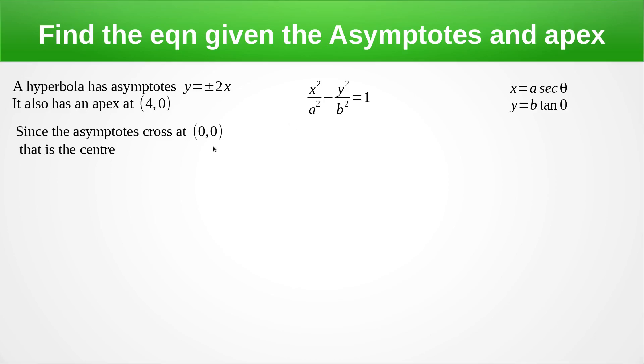The value of a is the distance between the centre and the apex. So a has a value of four. I now need to find b. And we use the gradient of the asymptote. And the gradient here is two. So that means b over a equals two from the formula. So that gives us that b equals eight.